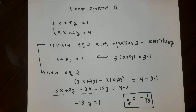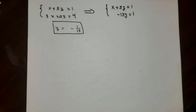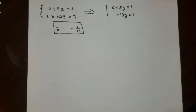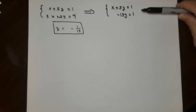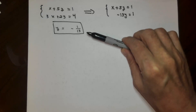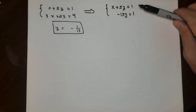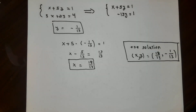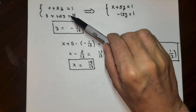Meaning that y must be negative 1 over 13. Assuming I've done my arithmetic correctly, I know one of the two variables now. By taking one of the equations and replacing it with a combination of itself and the other equation, we transformed the system. This has the same set of solutions as the original system, because we could recover the original. Negative 13y equals 1 immediately tells us y is negative 1 over 13, and the first equation gives us x equals 18 over 13. If the arithmetic is correct, we have exactly one solution — one pair of numbers x and y that make both equations true.